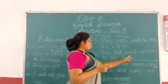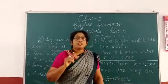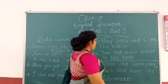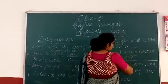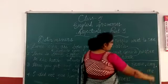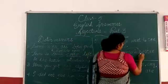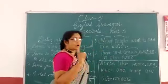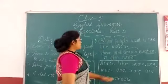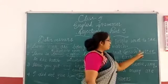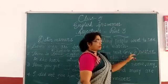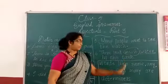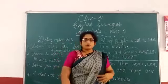'Much' is used with uncountable nouns. You know that water is an uncountable noun. So 'much' is used before uncountable nouns, and 'many' is used before countable nouns.